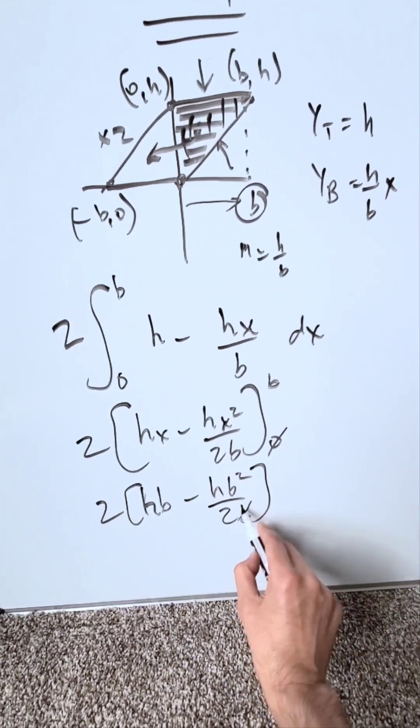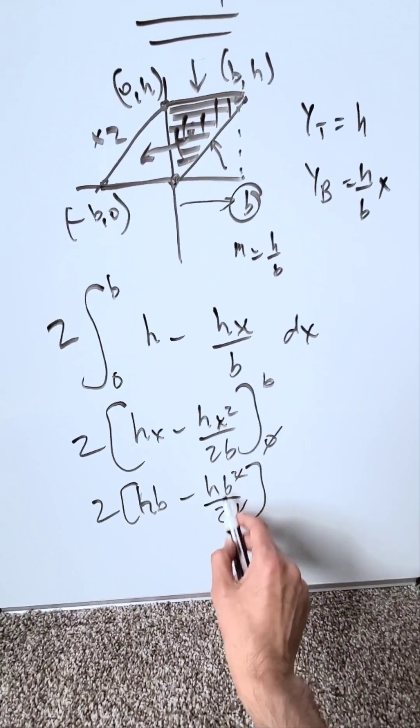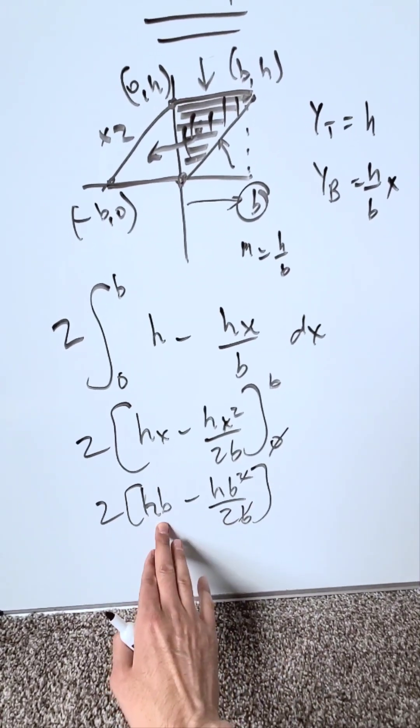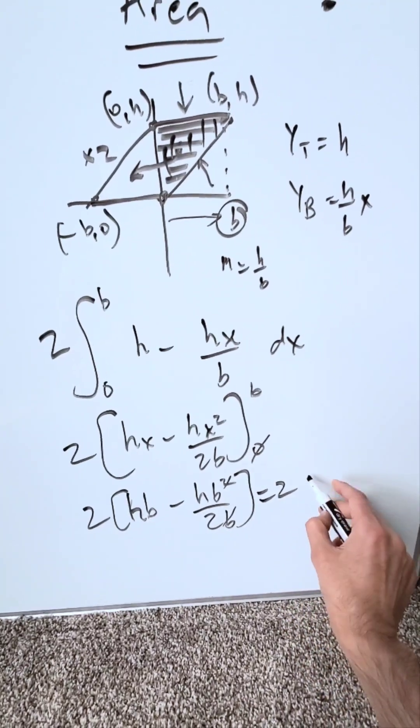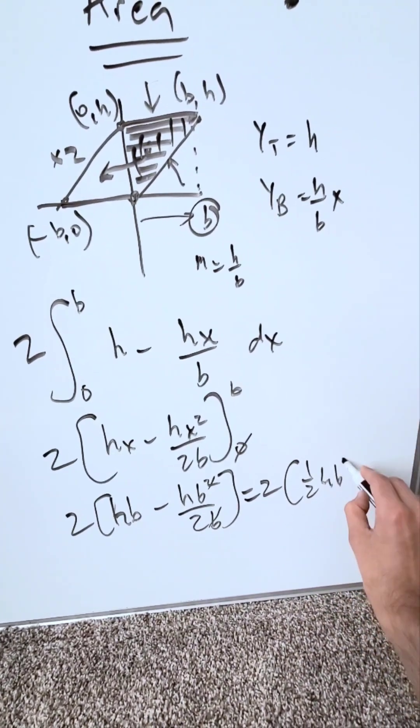When you simplify this, you'll have a half hb. I have a full hb minus a half hb equals half hb. I'm seeing here 2 times a half hb.